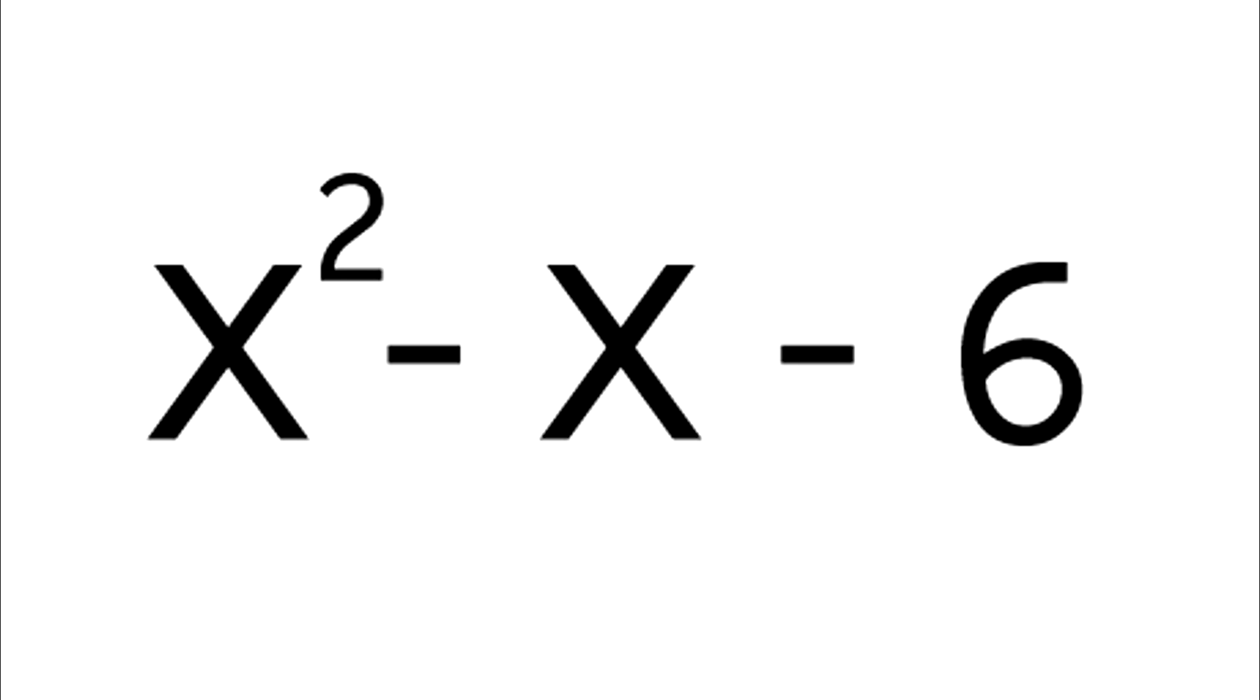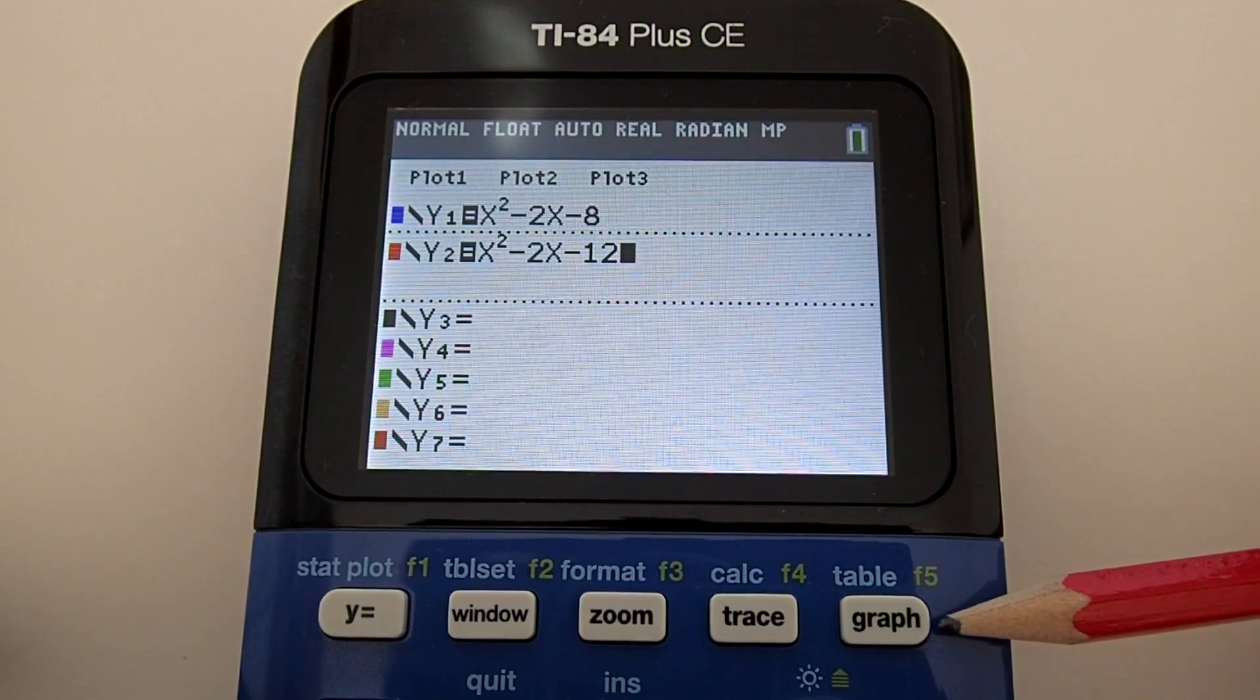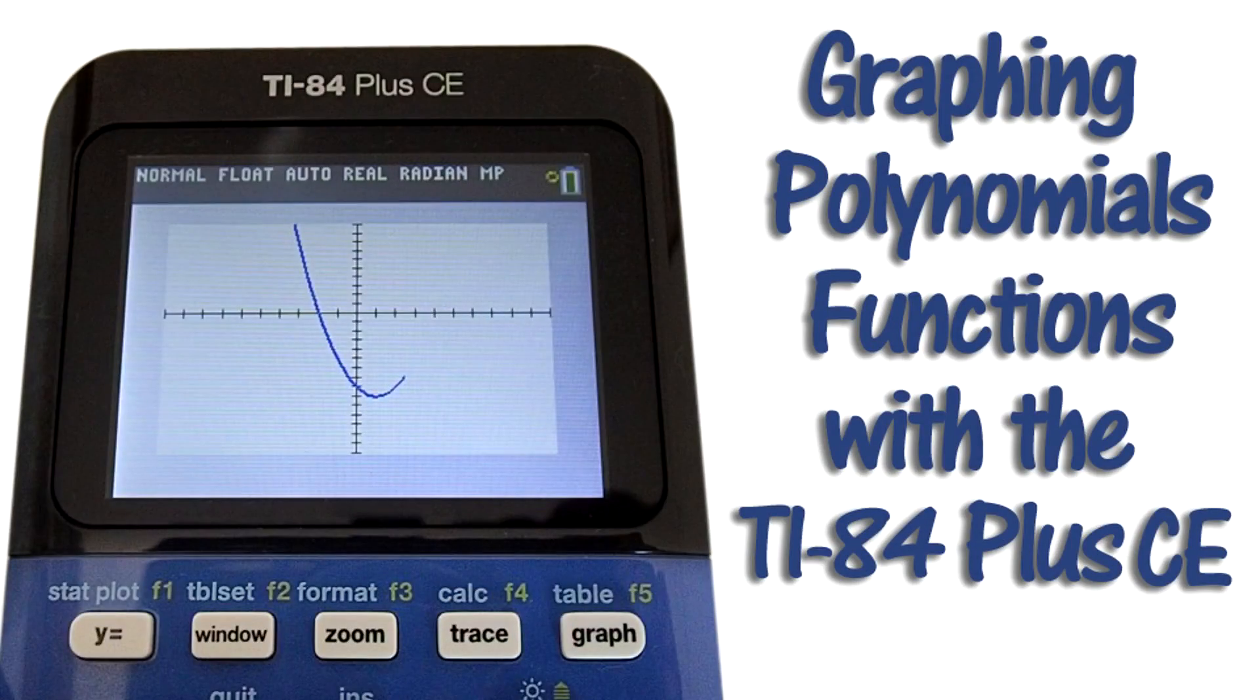We are going to use the polynomial equation of x squared minus x minus 6. First thing we need to do is graph this equation. If you need more help on how to use the graphing feature of the calculator, please see my video How to Graph a Polynomial Function Equation on the TI-84 Plus CE. I will put a link in the description below.